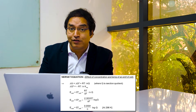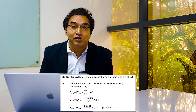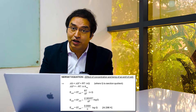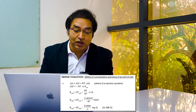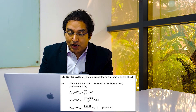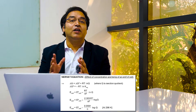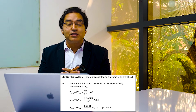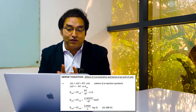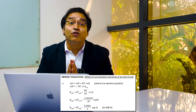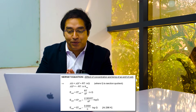ΔG° negative means spontaneous; greater than zero means non-spontaneous; equal to zero means equilibrium. Now, this result should be clear: E°-cell = 0.0591/N × log K-equilibrium.